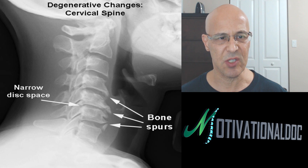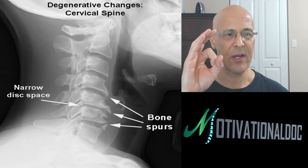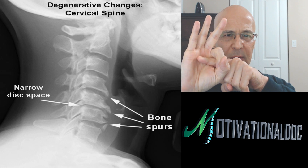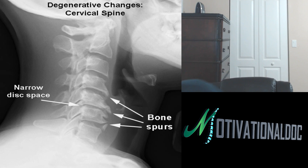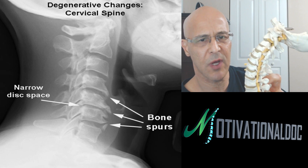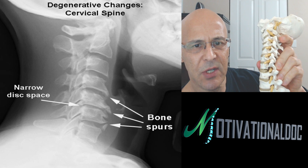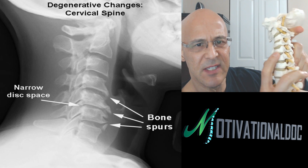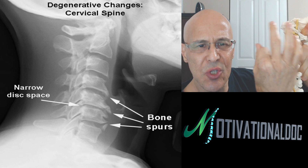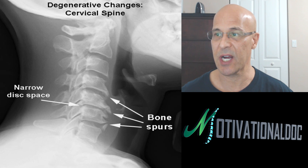Generally when we have degeneration, you're going to see the discs between the vertebrae thin. As a disc thins, there's a hole called the intervertebral foramen or IVF, and that's where the nerve comes out. If those disc spaces get narrower, that hole gets smaller, causing more compression. This is why degeneration leads to more irritation on nerve roots.